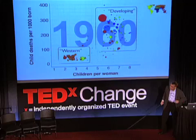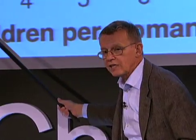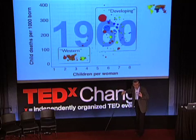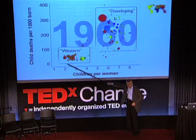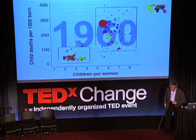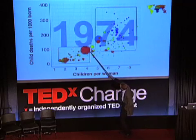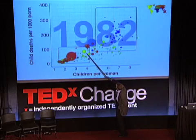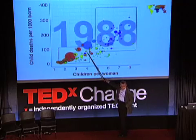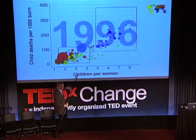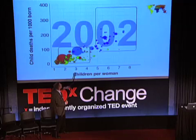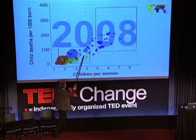And those over there were the so-called western countries — they had low child mortality and small families. What I want you to see with your own eyes is the relation between falling child mortality and decrease in family size. Here we come down with the eradication of smallpox, better education, health service. China comes into the western box, then Brazil, India is approaching it, and the first African countries are coming into the western box. We get a lot of new neighbors — welcome to a decent life. There we are today.